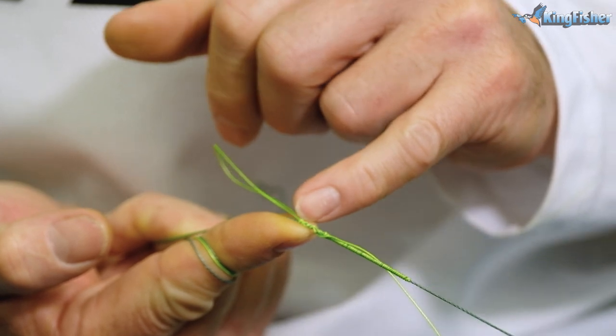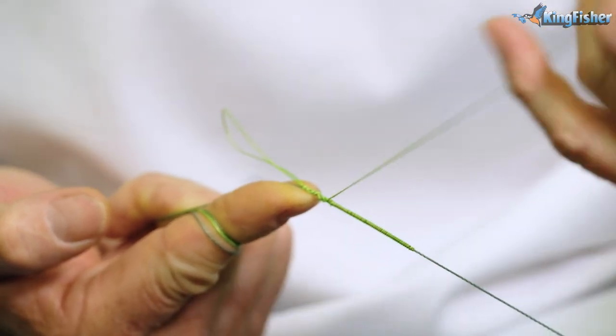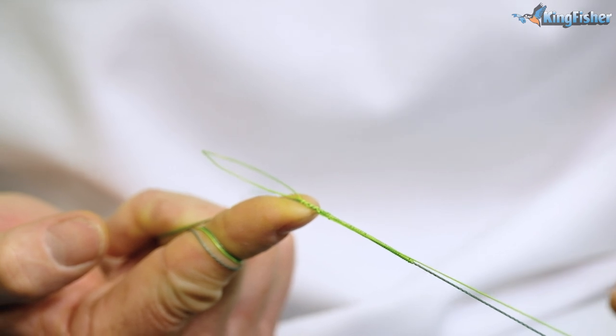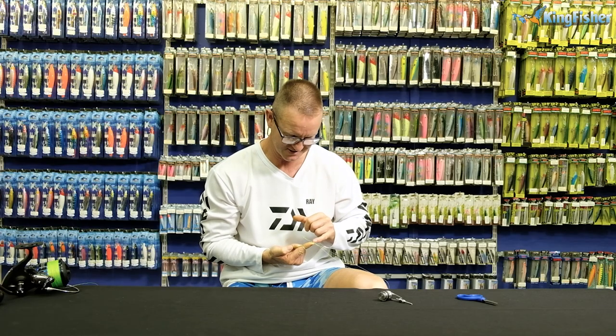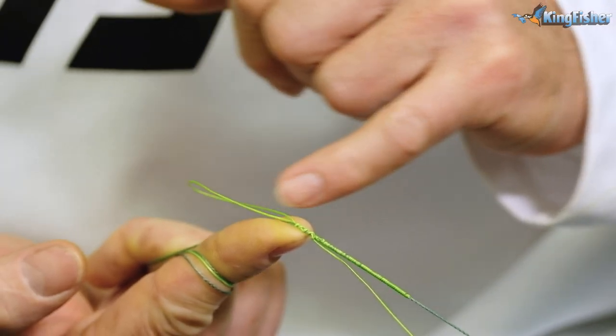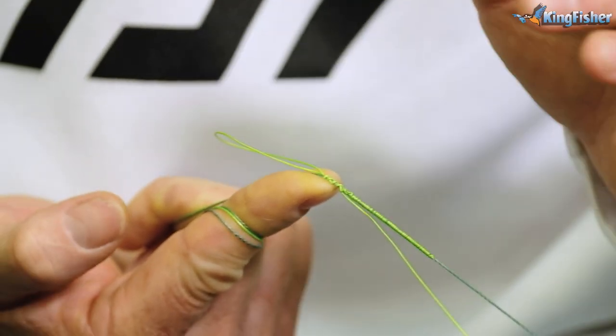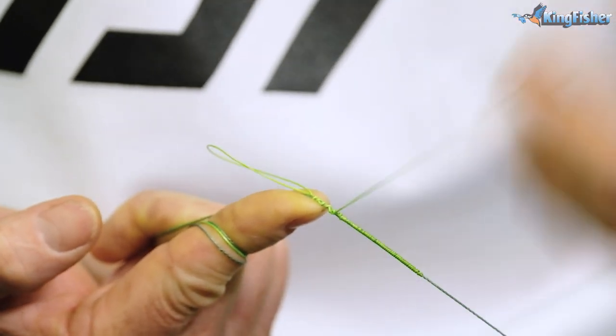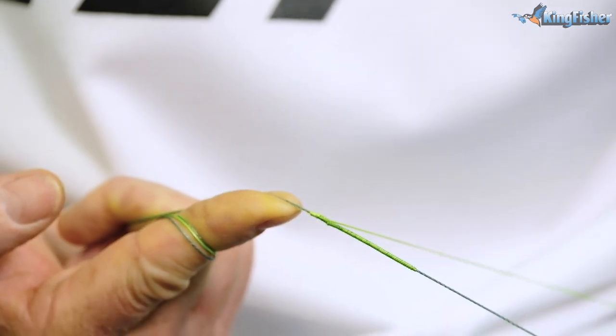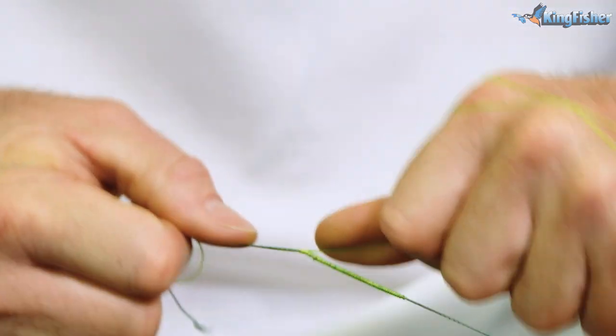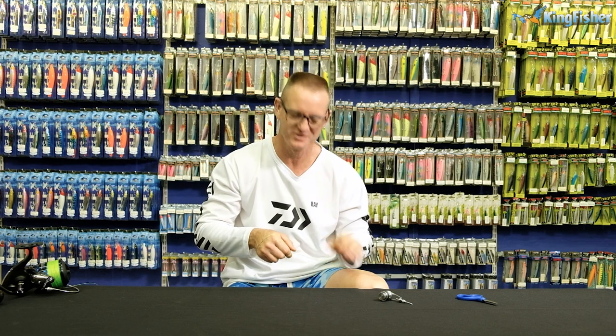Now if I pull the tag end, what it does, as you can see there, it starts pulling that tag end underneath those six knots. What that does is actually those six knots or half hitches actually lock this in place so it doesn't come undone. And that's very important. All the way down. You can see how it pulled tight there. And lock it by pulling as tight as you can on the tag end.